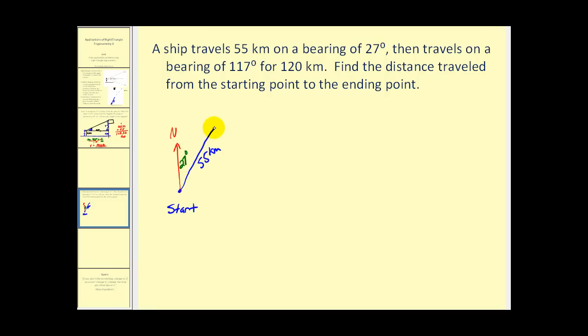Now from this point, this is due north. Now we'll rotate 117 degrees for 120 kilometers. 117 degrees would be, that would be roughly 90, and then about 27 more, for a distance of 120 kilometers. Let's call this 120 kilometers. And this would be 117 degrees.